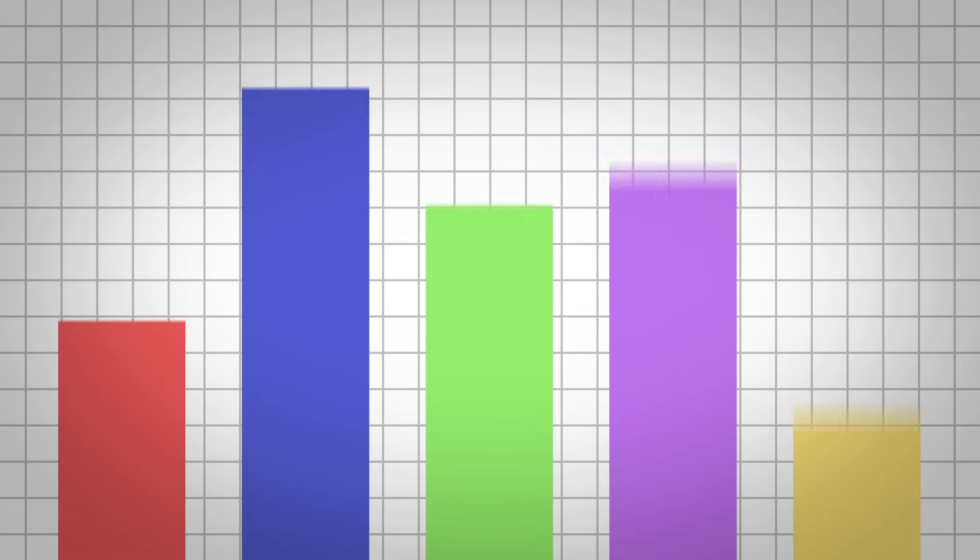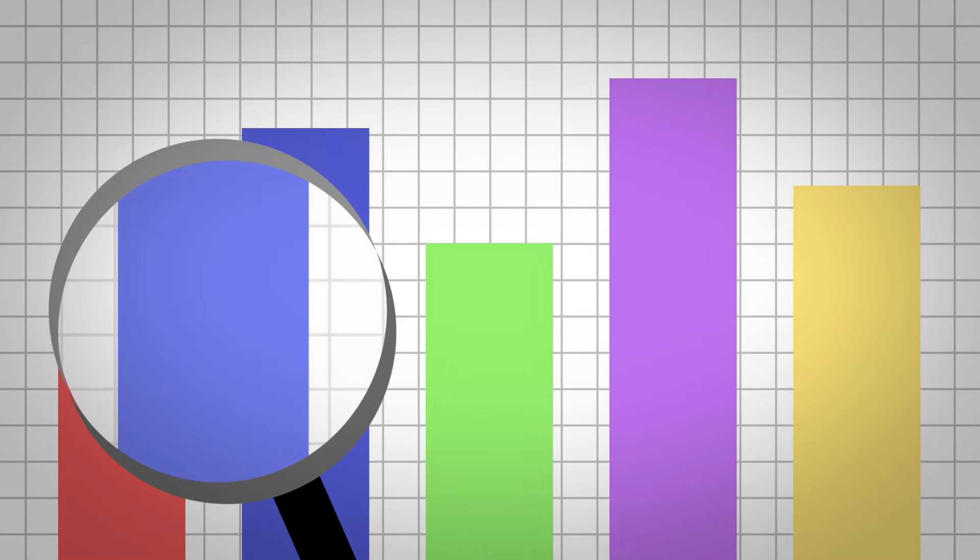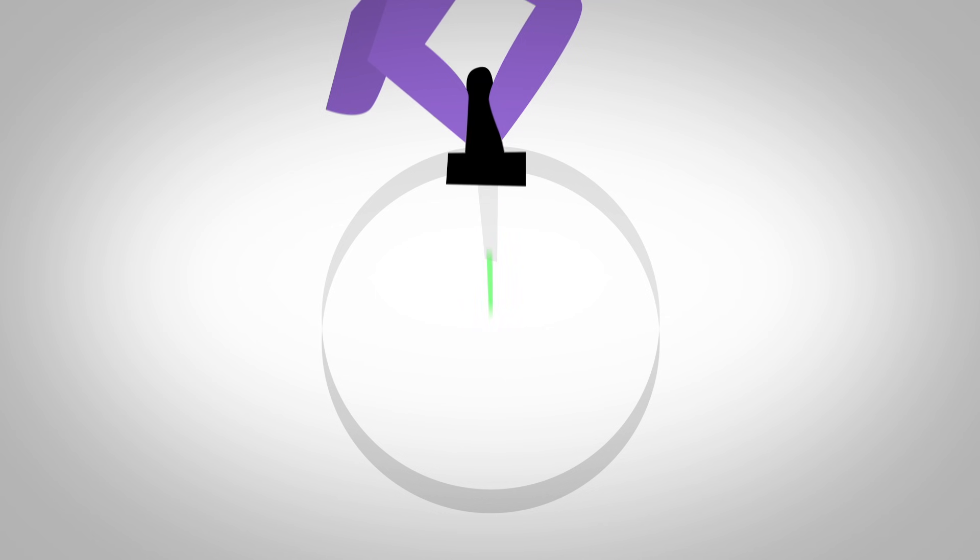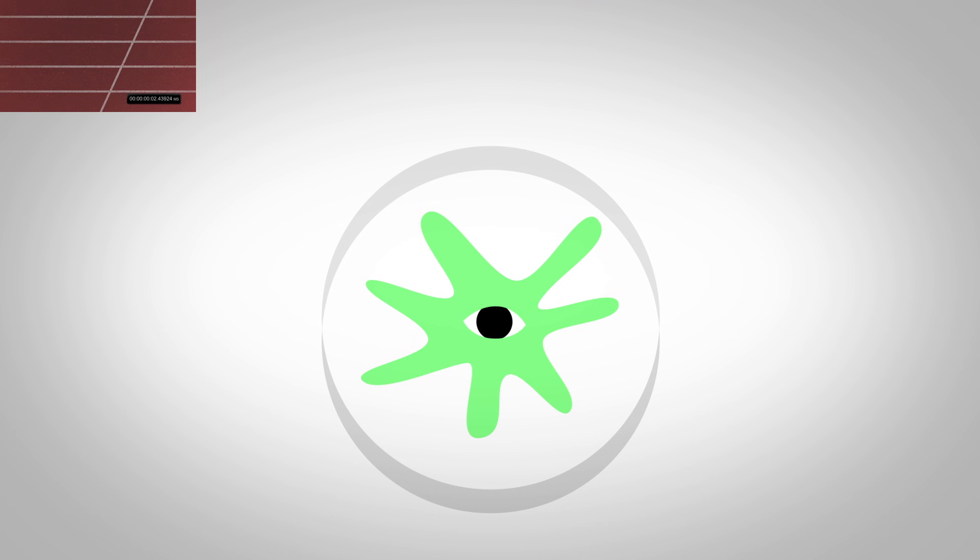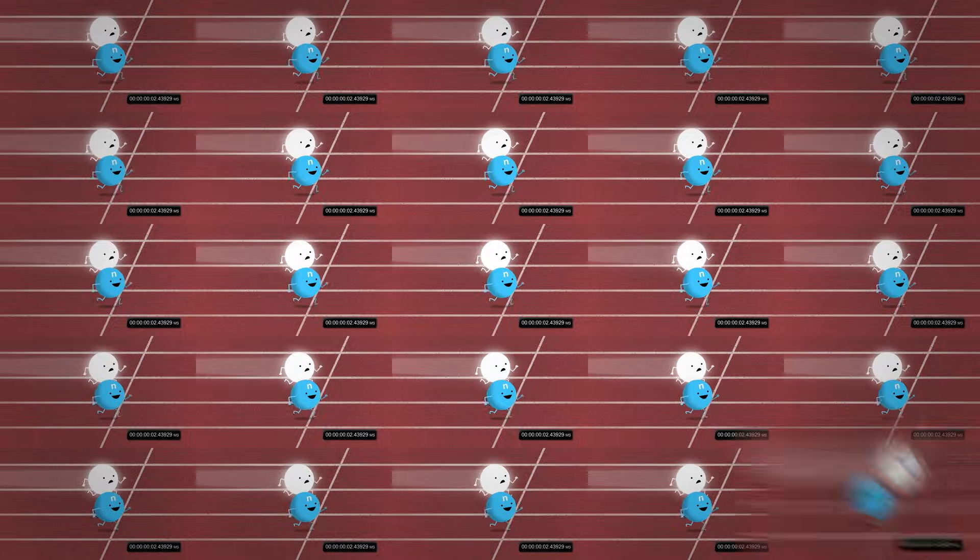When findings are significant, they are frequently double-checked by other researchers, either by reanalyzing the data or by redoing the entire experiment. For example, it took repeated investigation of the CERN data before the timing error was tracked down.